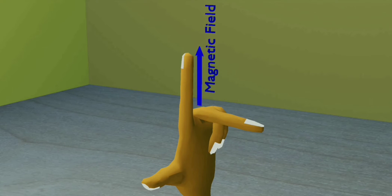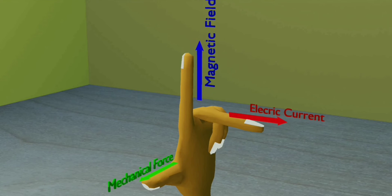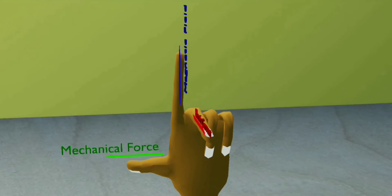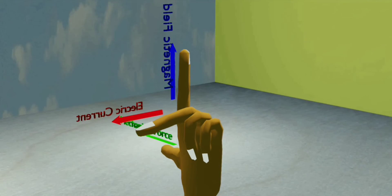Then if the forefinger shows the direction of the magnetic field and the middle finger towards the electric field, then the thumb indicates the direction of the mechanical force that the electric conductor will experience.